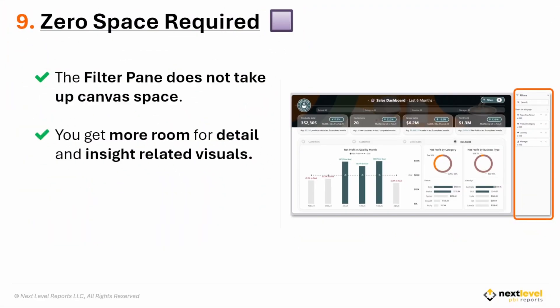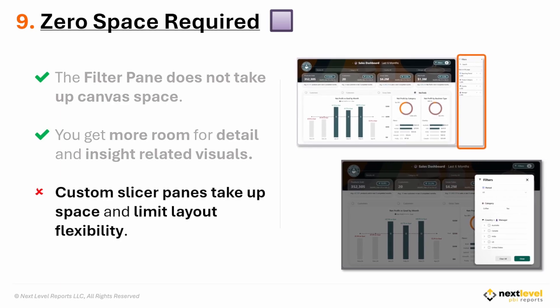Reason number nine: no real estate needed. The filter pane doesn't take up any valuable space on your report page, so your users can view the report fully while still accessing every filter they need. Whether it's opened or closed, your layout always remains visible and uncluttered, giving you more room for your visuals, KPIs, and insights. A custom slicer pane, on the other hand, will always require some dedicated space on your canvas — maybe an overlay, maybe built into your canvas — but no matter how you do it, it does limit your design options.